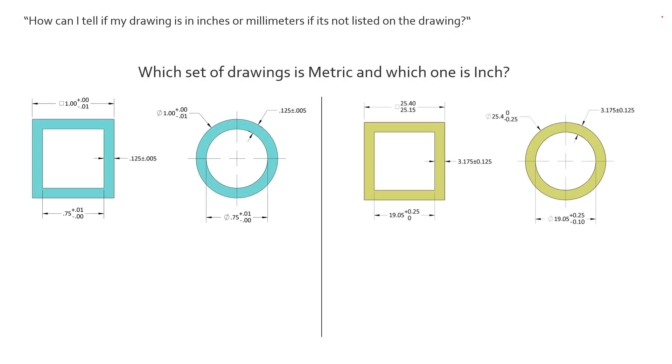Well if we take a look at these two example drawings, we see one on the left and one on the right. It's the same part just dimensioned and toleranced with different units. So which set of these drawings is metric and which one is inch?